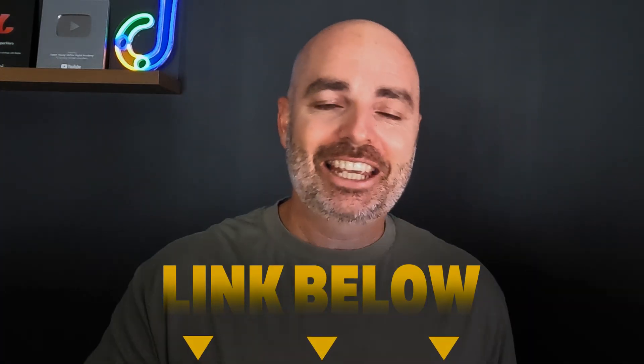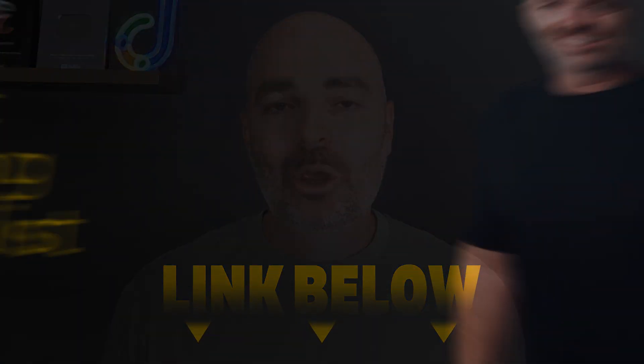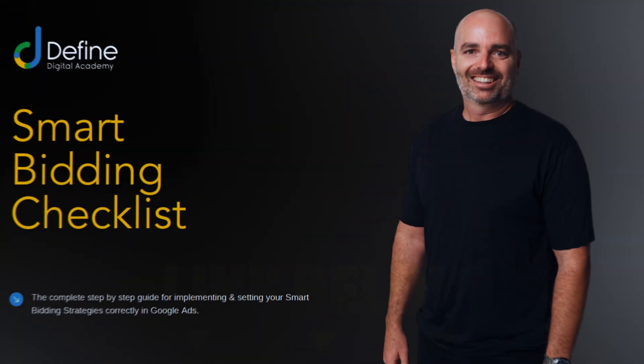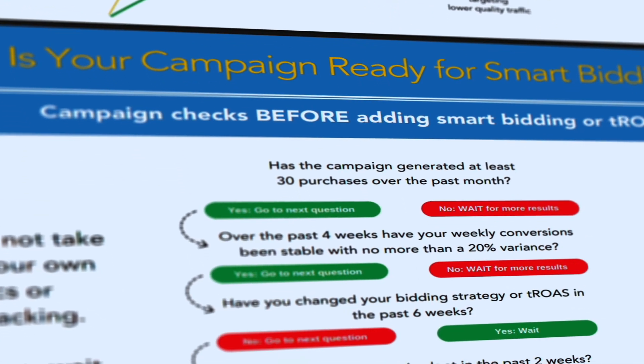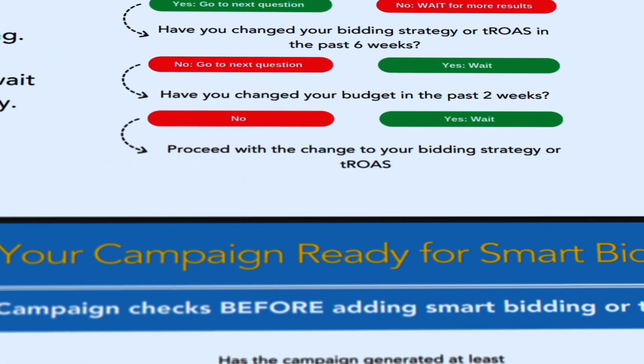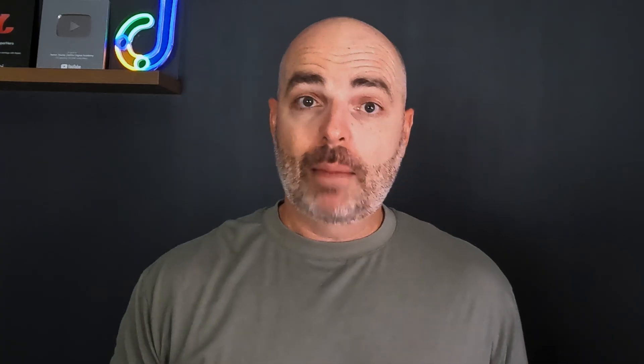Now to help you with this — because as I said, it is quite a complicated thing to get right — if you do need some more help with your smart bidding and getting this set correctly, if you follow that link in the description below, you can get access to my smart bidding checklist. This is a process that we use in Define Digital Academy to make sure we get this decision right every time. But let's get into the teaching for today.